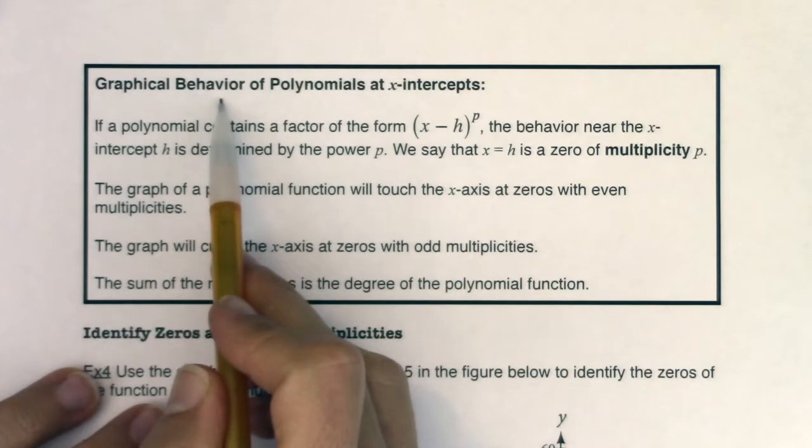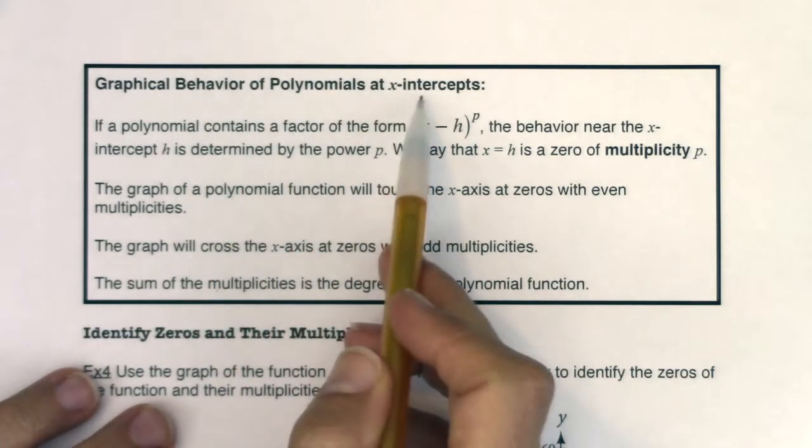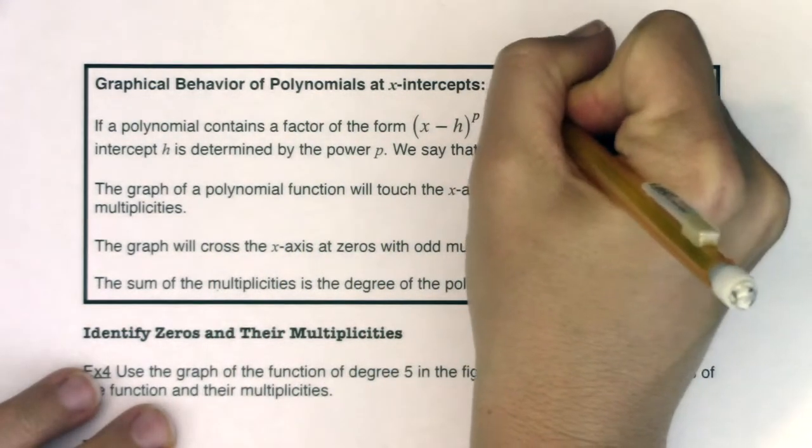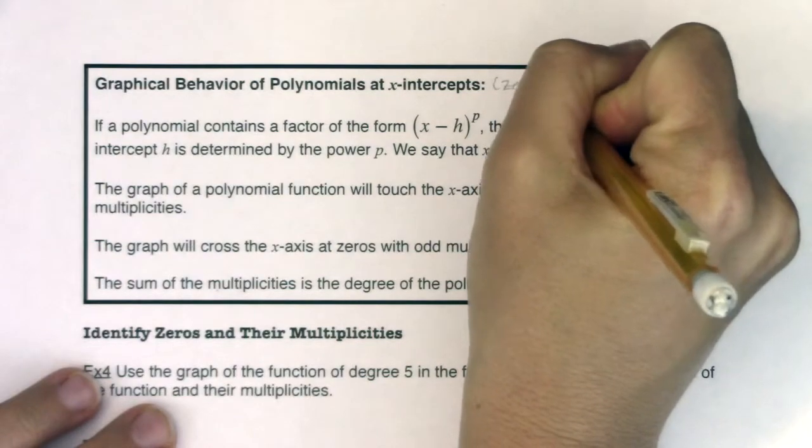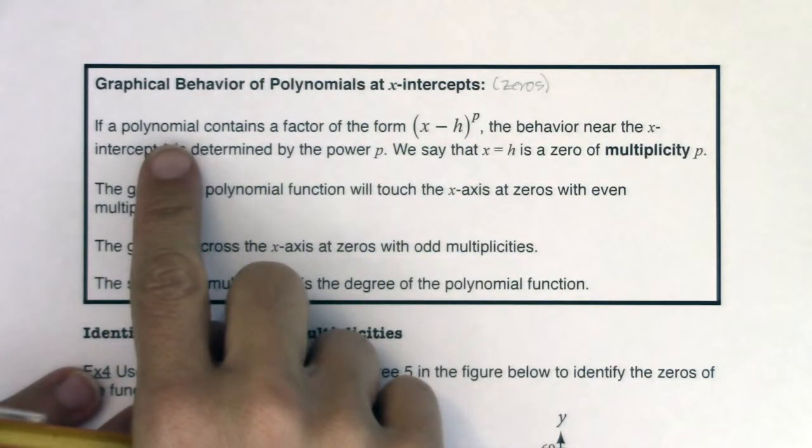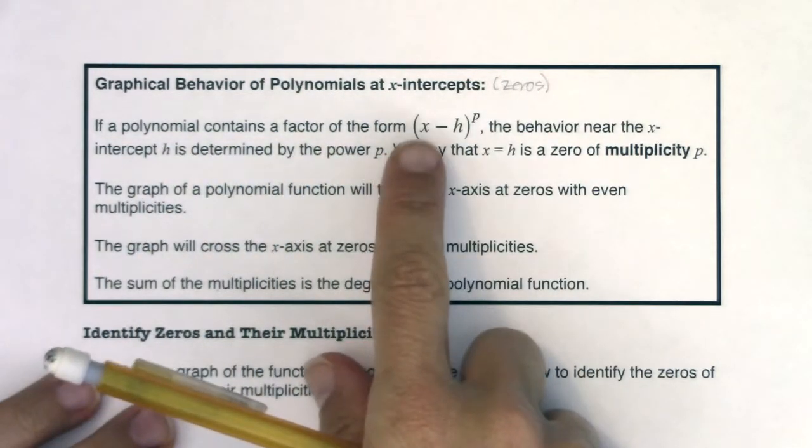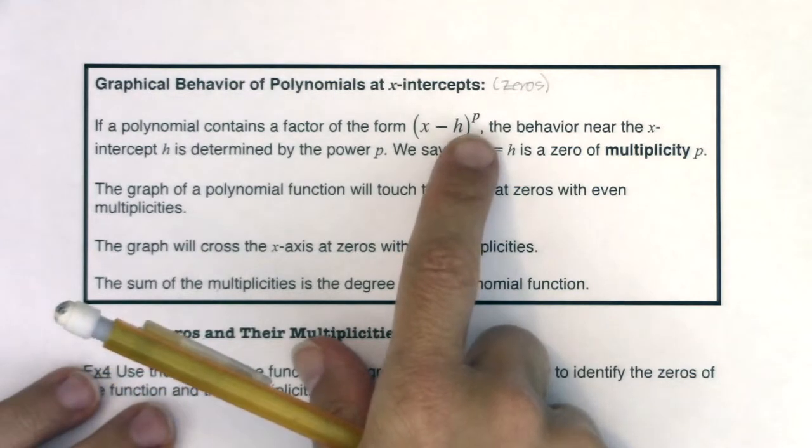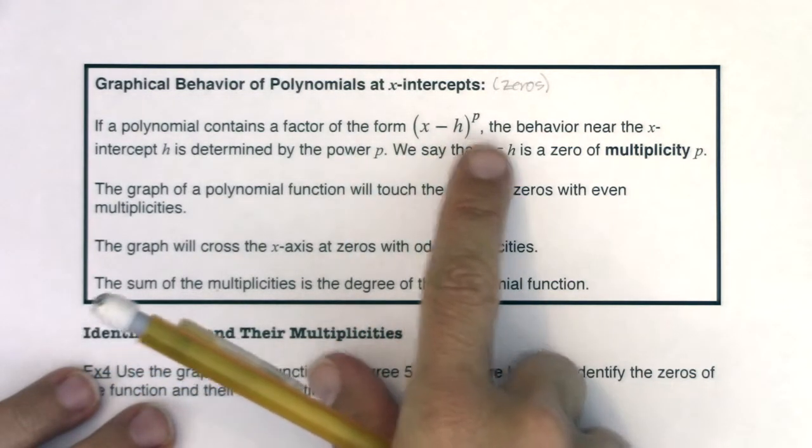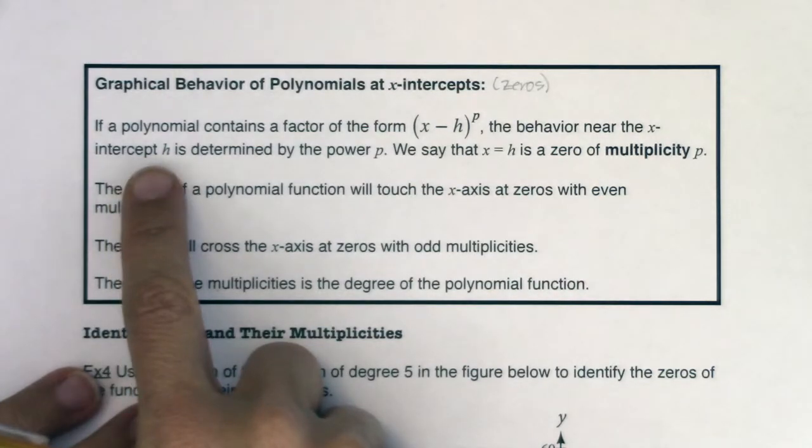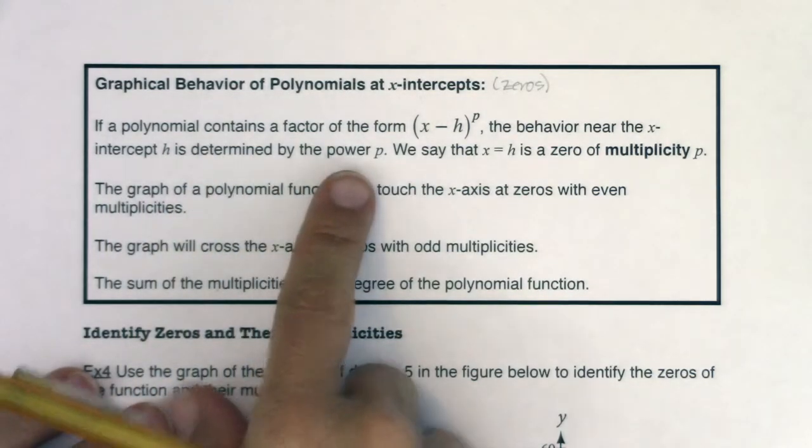Graphical behavior of polynomials at x-intercepts, and remember that x-intercepts are also referred to as zeros. So if a polynomial contains a factor of the form (x - h) raised to some power p, the behavior near the x-intercept, that x-intercept being h, is determined by the power p.